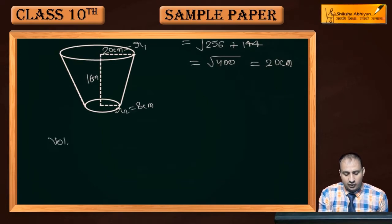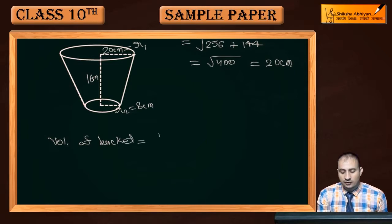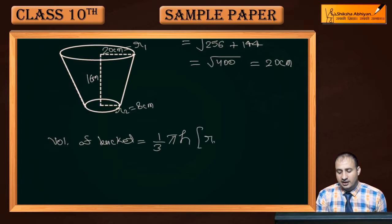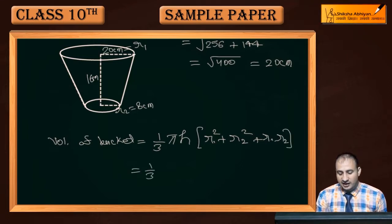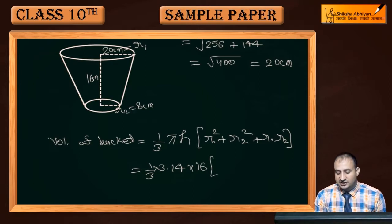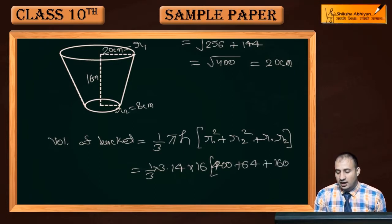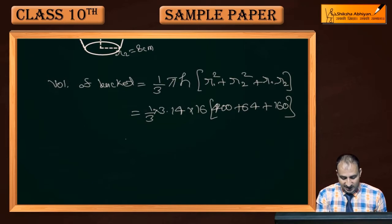Volume of the bucket using the frustum formula: Volume = (1/3)πh(r1² + r2² + r1·r2). Substituting values: (1/3) × 3.14 × 16 × (400 + 64 + 160), where r1² = 400, r2² = 64, and r1 × r2 = 20 × 8 = 160.